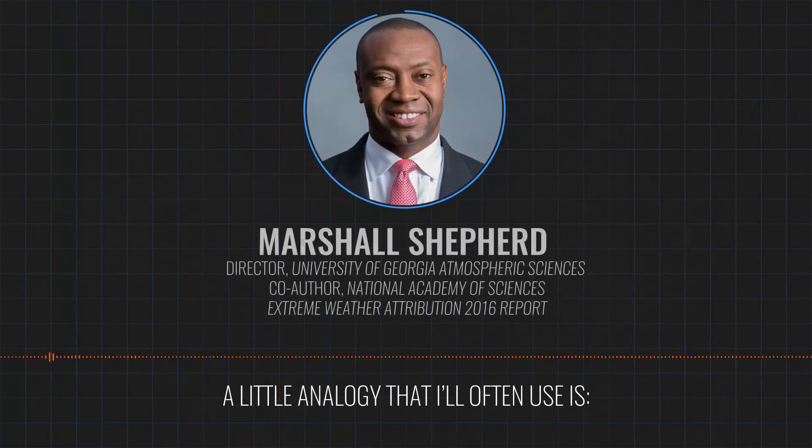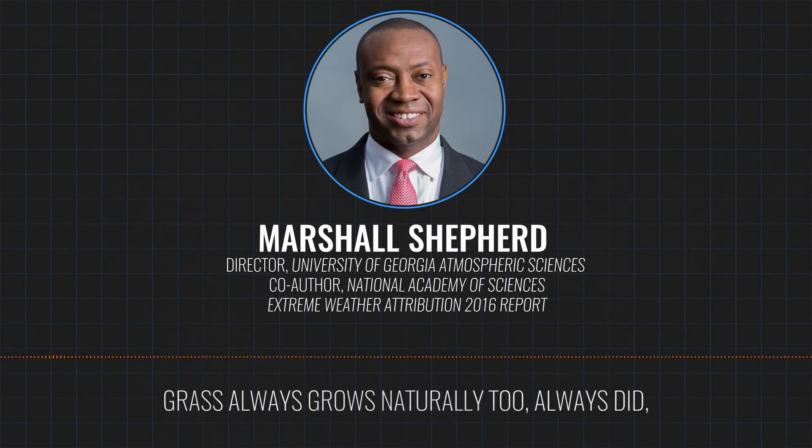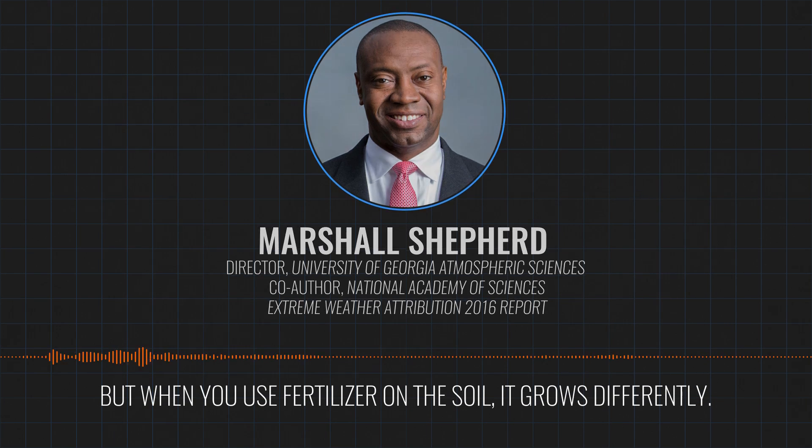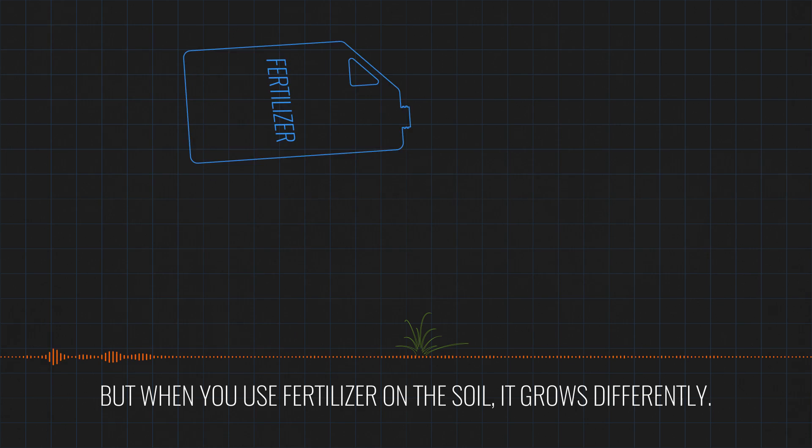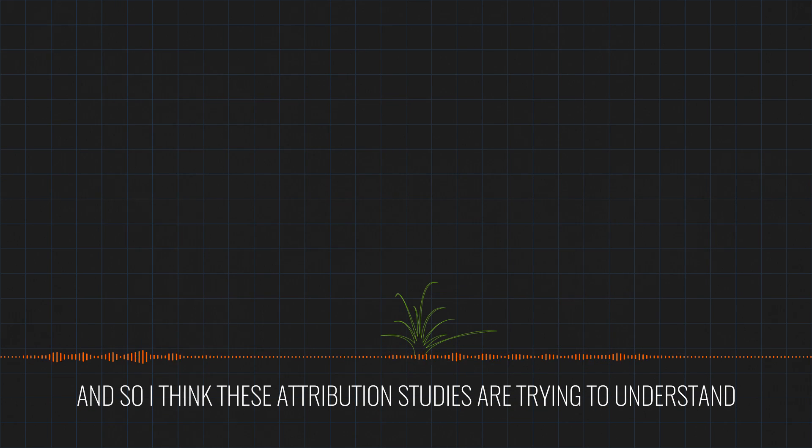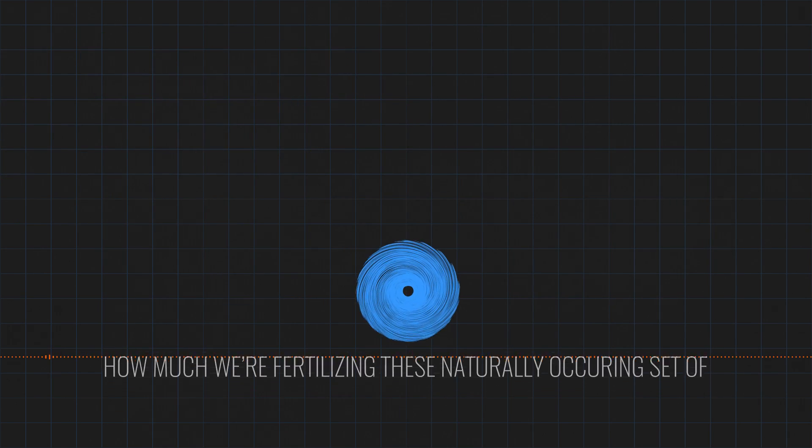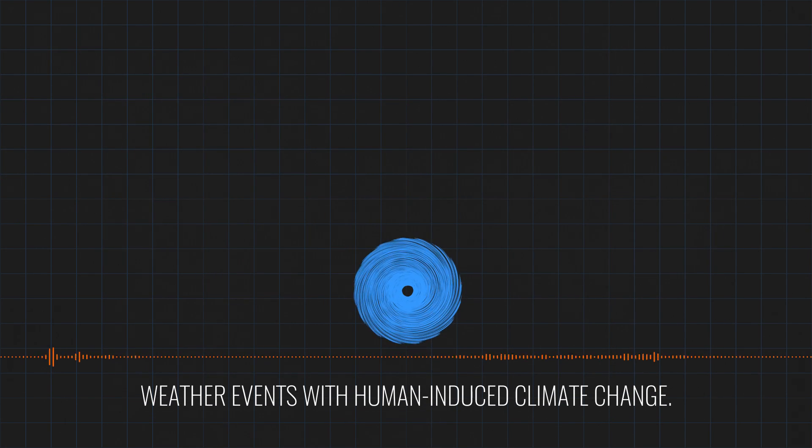Scientists run thousands of simulations in each of these worlds to figure out how frequently a particular extreme weather event might occur. An analogy that I often use is grass always grows naturally, always did. But when we use fertilizer on the soil, it grows differently. And so I think these attribution studies are trying to understand how much we're fertilizing this natural set of weather events with human-induced climate change.